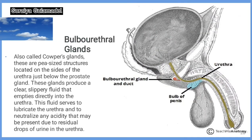And the last, bulbourethral glands. Also called Cowper's glands, these are pea-sized structures located on the side of the urethra just below the prostate gland. These glands produce a clear slippery fluid that empties directly into the urethra. This fluid serves to lubricate the urethra and to neutralize any acidity that may be present due to residual drops of urine in the urethra.